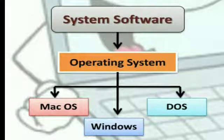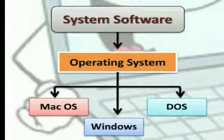In your previous chapter you have learned that a computer is made up of hardware and software. The software which controls the overall working of a computer is known as system software. An operating system is a system software. Let us learn about it.